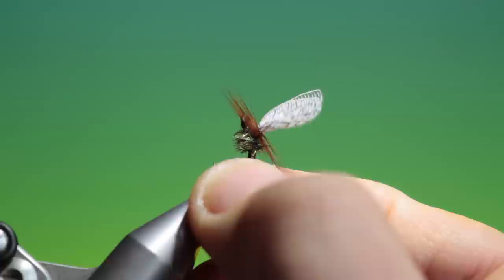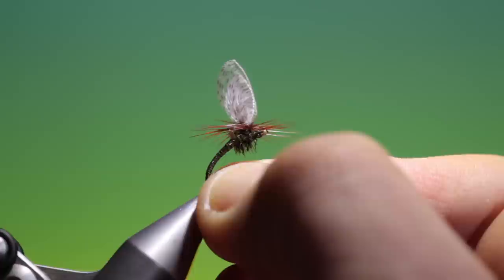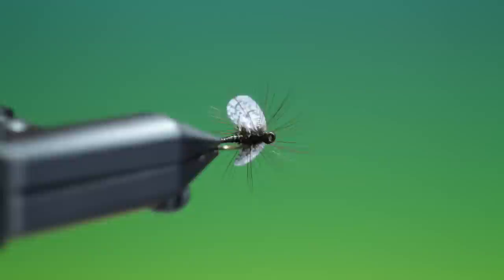Okay. And just put that back in. There we are. We can adjust the wings a little. If you want them more out to the sides. And that's it. That's the quill bodied Wally Wing emerger.